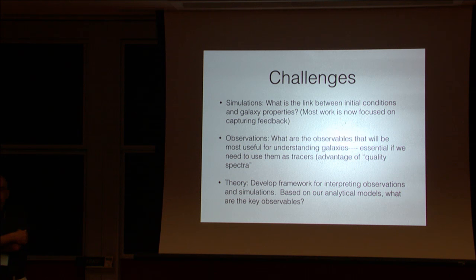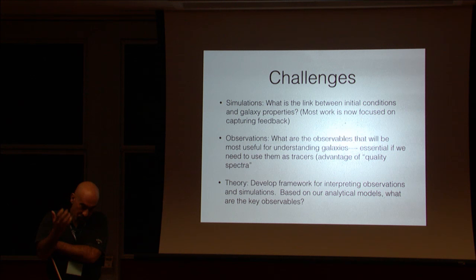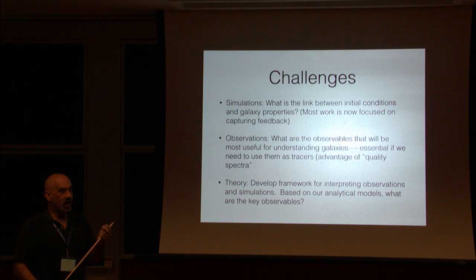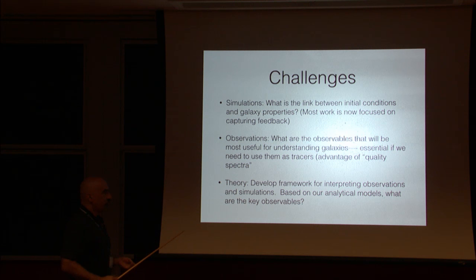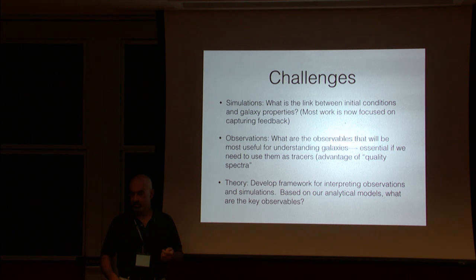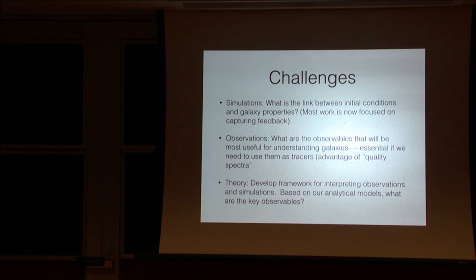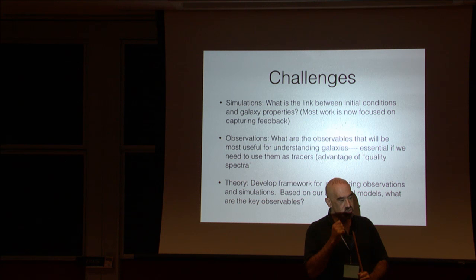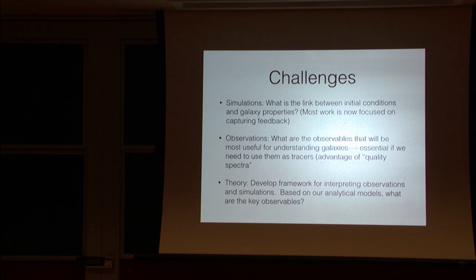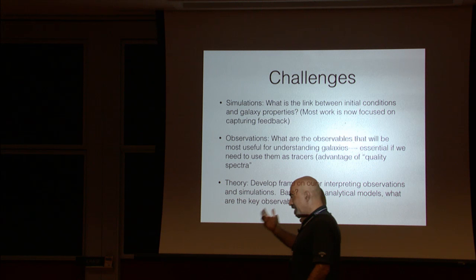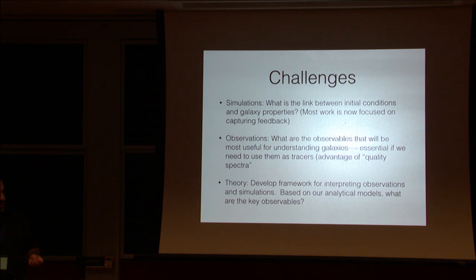One of the challenges for theory is to develop the framework for interpreting observations. We as a community have done pretty well with halo mass — we understand the framework for going from halo mass to luminosity observations. But I'm not sure what the next thing we should be looking at is, or how we can turn to the observations and simulations and pull that out. Going beyond the current bias-as-a-function-of-mass description means thinking about: is there more physics, how do we identify it, and what is the most important physics to study?